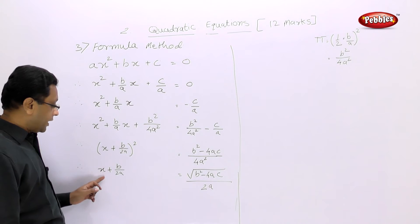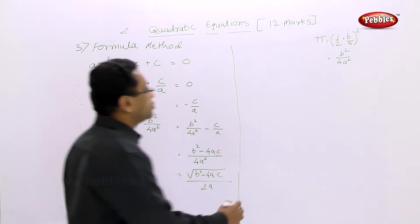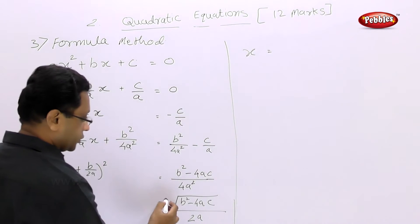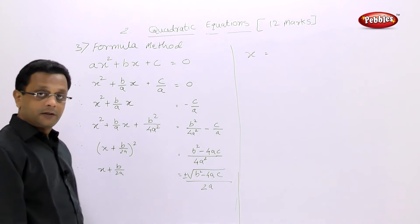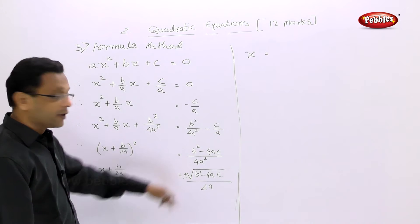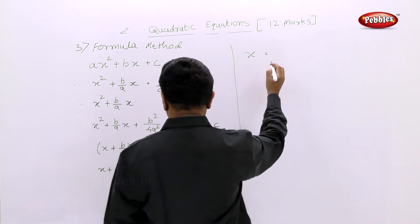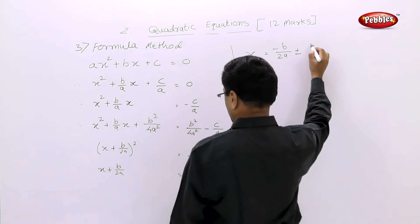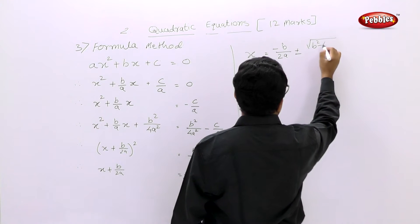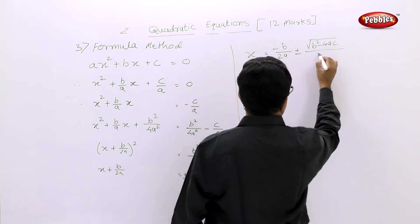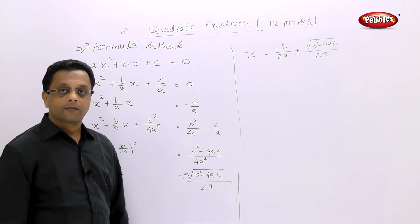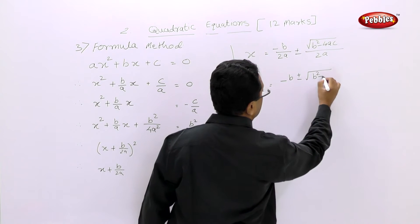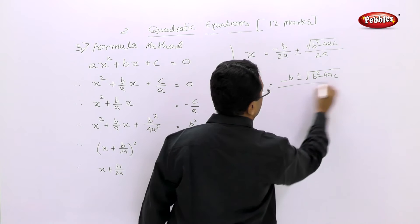To find x, we shift B/2A to the right-hand side. So x = −B/2A ± √(B² − 4AC)/2A, which gives us x = (−B ± √(B² − 4AC)) / 2A.